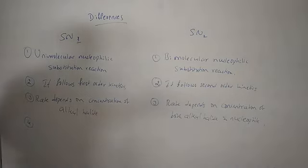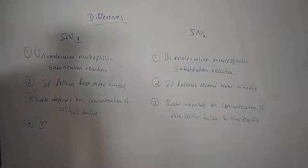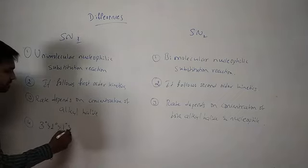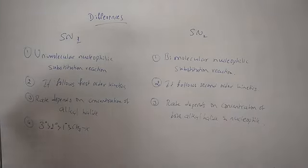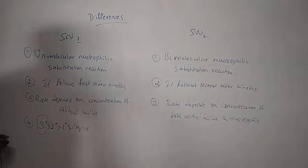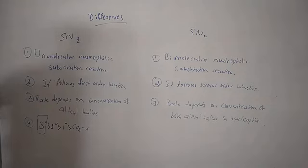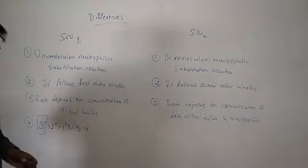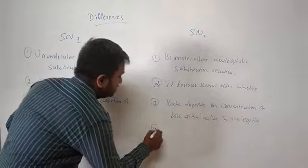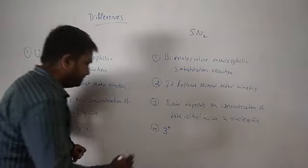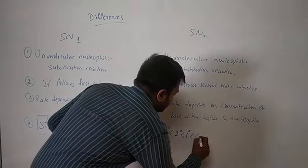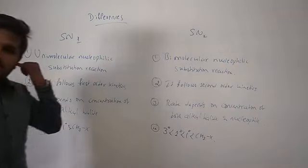In SN2, the rate depends on the concentration of both the alkyl halide and the nucleophile. Fourth: the rate of reactivity in SN1 is higher for tertiary, followed by secondary, then primary, and finally methyl halide. For this reason SN1 mechanism is favored for tertiary carbon compounds. In SN2, the order is opposite: methyl halide reacts fastest, followed by primary, secondary, and tertiary has the least reactivity.